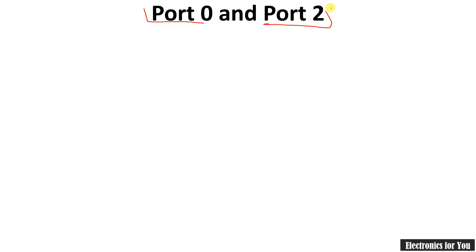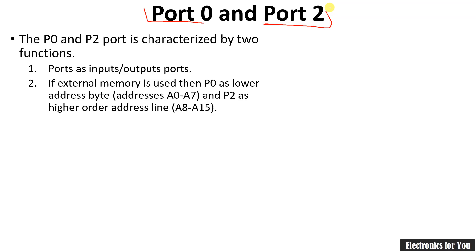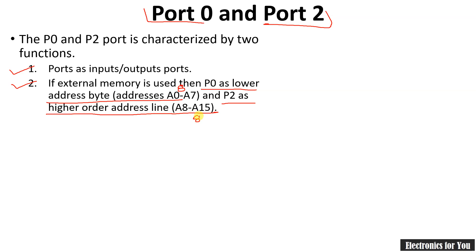The first ports to discuss are Port 0 and Port 2. Both can function as IO ports. Apart from this, if external memory is connected, we can connect external memory to Port 0 and Port 2 simultaneously. In that case, Port 0 works as the lower-order address lines (A0 to A7) and Port 2 works as the higher-order address lines (A8 to A15). So Port 0 has 8 lines for lower-order and Port 2 has 8 lines for higher-order address lines.